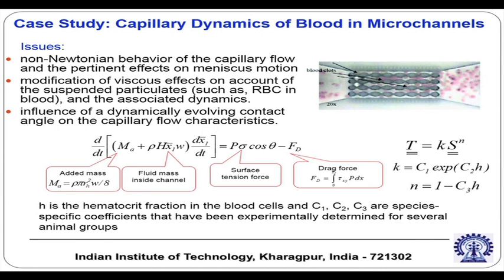The consistency index k depends sensitively on the hematocrit fraction h. In medical applications, equations and expressions are not always derived from first principles. The expressions for k and n given here are not derived from first principles but are curve-fitted from a huge number of experimental data collected over the years. Some coefficients C1, C2, C3 appear in this context.